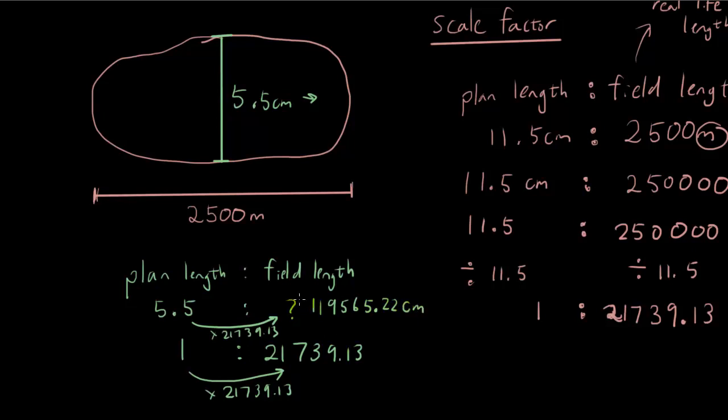So I have 119565.22 centimeters. So it's not a question mark anymore. I found the length. It's 119565.22 centimeters. Now, so that is the width of the lake, but we have the length of the lake expressed in meters. So it sort of makes no sense if you have meters on one side, centimeters on the other side. You want to try and make it consistent.